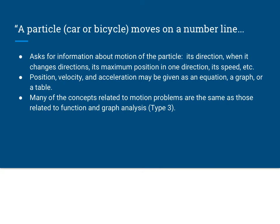So for linear motion, generally it asks for information about the motion of the particle. Makes sense. You might want to know its direction, moving right or left, up or down. When it changes direction, so that's when you set the derivative equal to zero and look at when it changes signs.